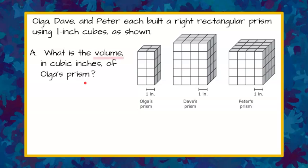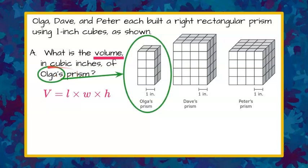Welcome back. So we're being asked to find the volume of Olga's prism. To find volume, it's length times width times height. We're only asked for Olga. You've been given three prisms, and we're going to focus just on Olga's prism for part A.